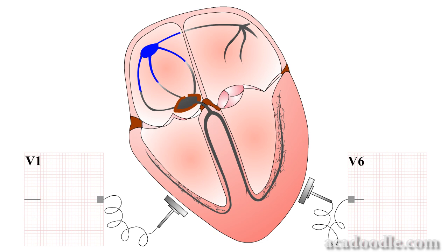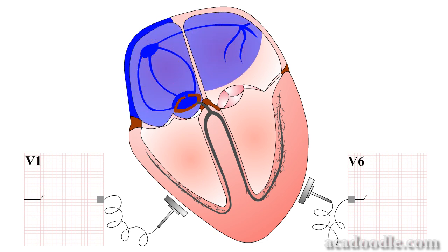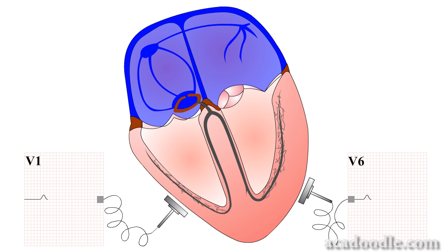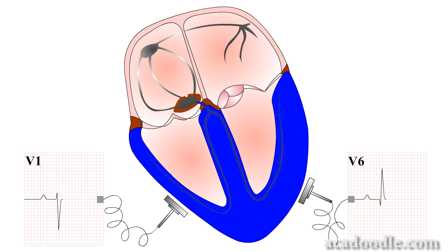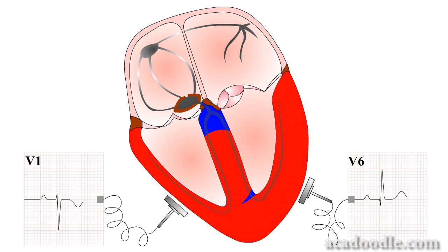In video 1 of this section, we explained how the cardiac depolarisation and repolarisation waves spread through the chambers of the heart. In this video, we will go on to explain how these electrical events are analysed by the ECG leads to produce the waveforms of the ECG readout.